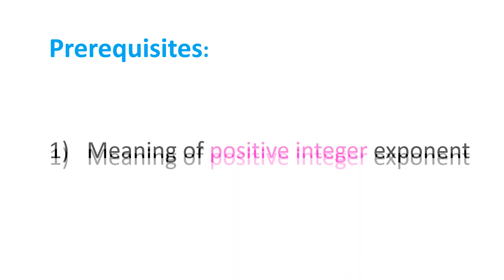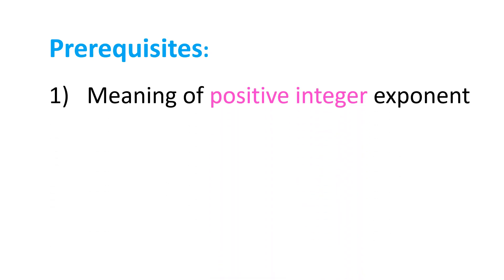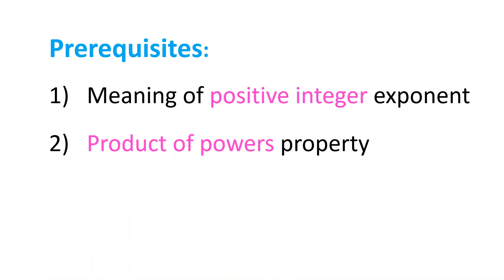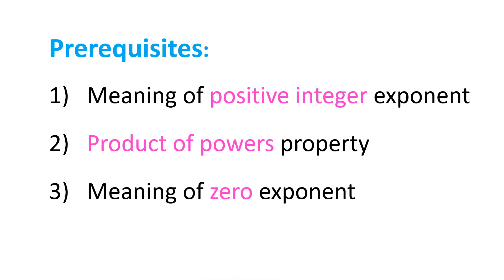Before we define negative exponent, we have the following prerequisites. First, we need to know the meaning of positive integer exponent. Second, we need to know the product of powers property. And third, we need to know the meaning of zero exponent. Once we understand all of these three things, we will understand the logic why negative exponents are defined the way they are.